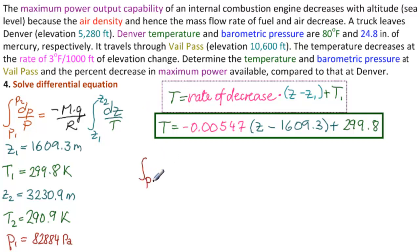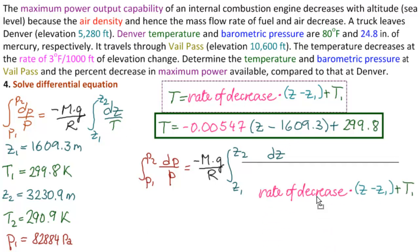So what is our differential equation when we substitute this for t? We have the integral of p1 to p2 of dp over p equals our constants minus mg over r. And then our integral from z1 to z2 of dz. Now substituting this for t we put this down here. The rate of decrease times z minus z1 plus t1.